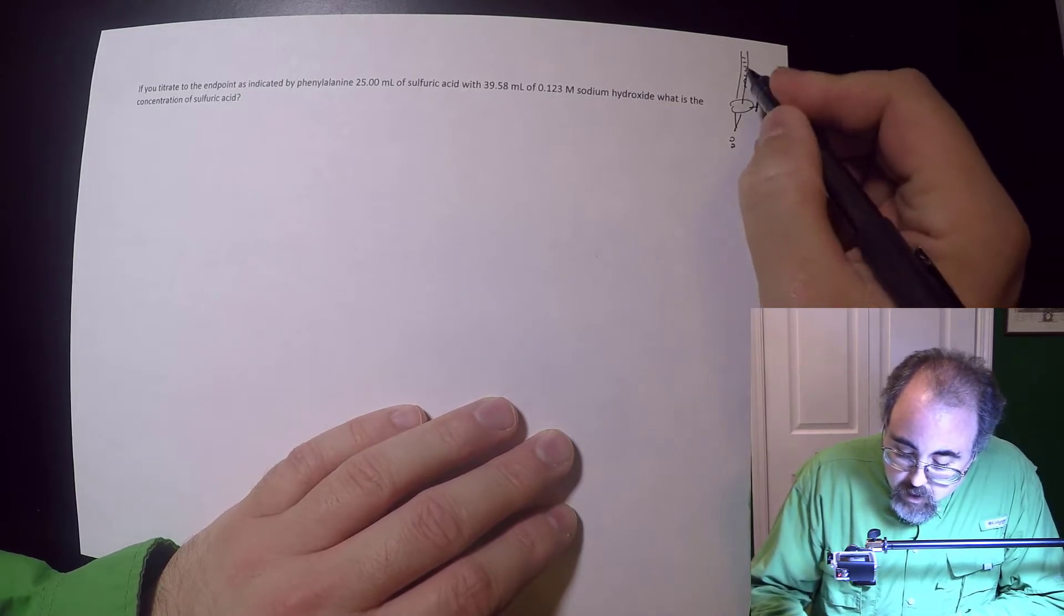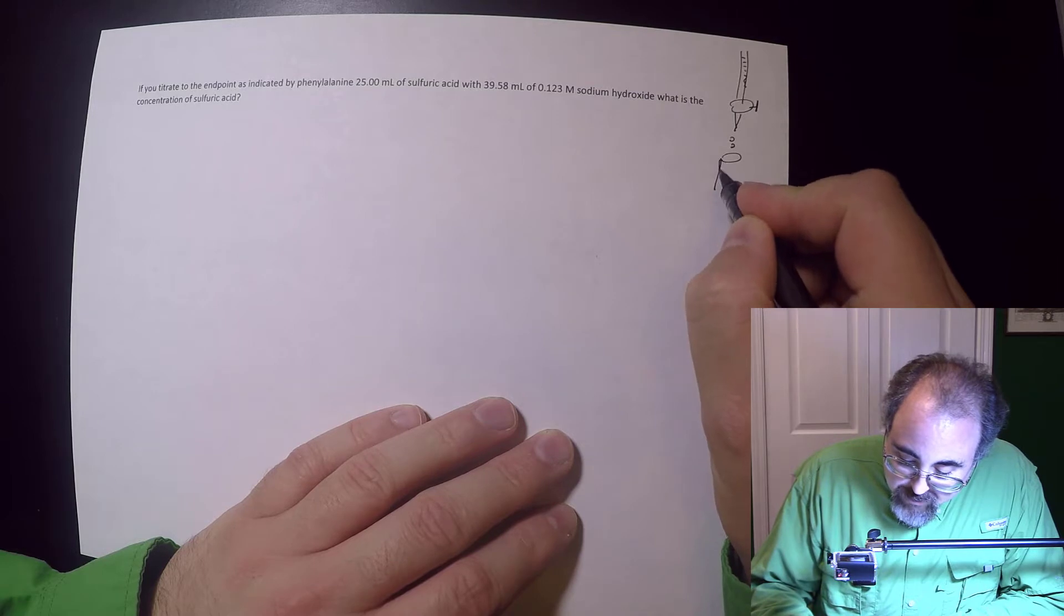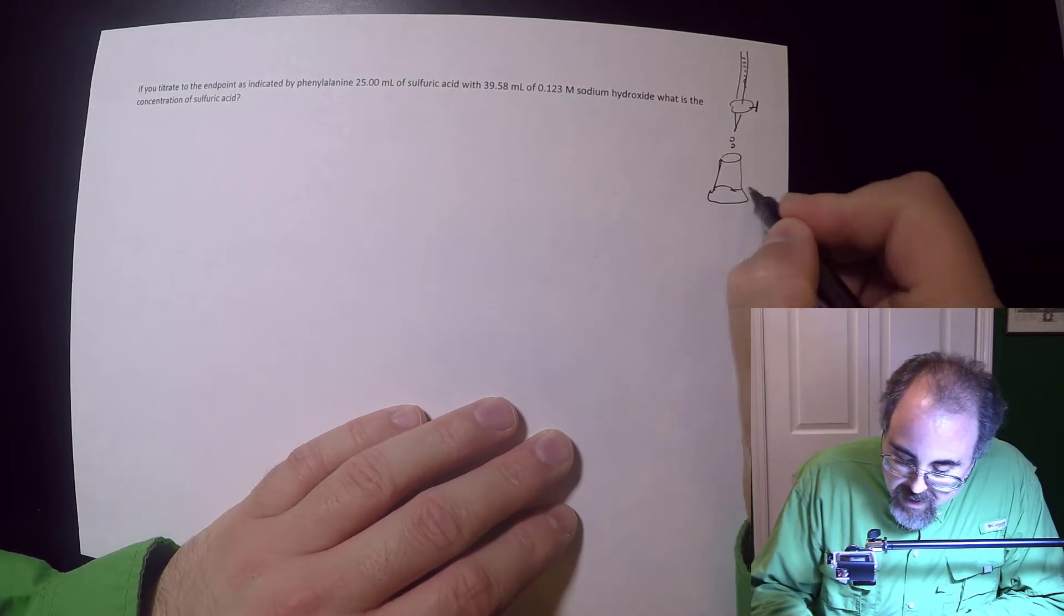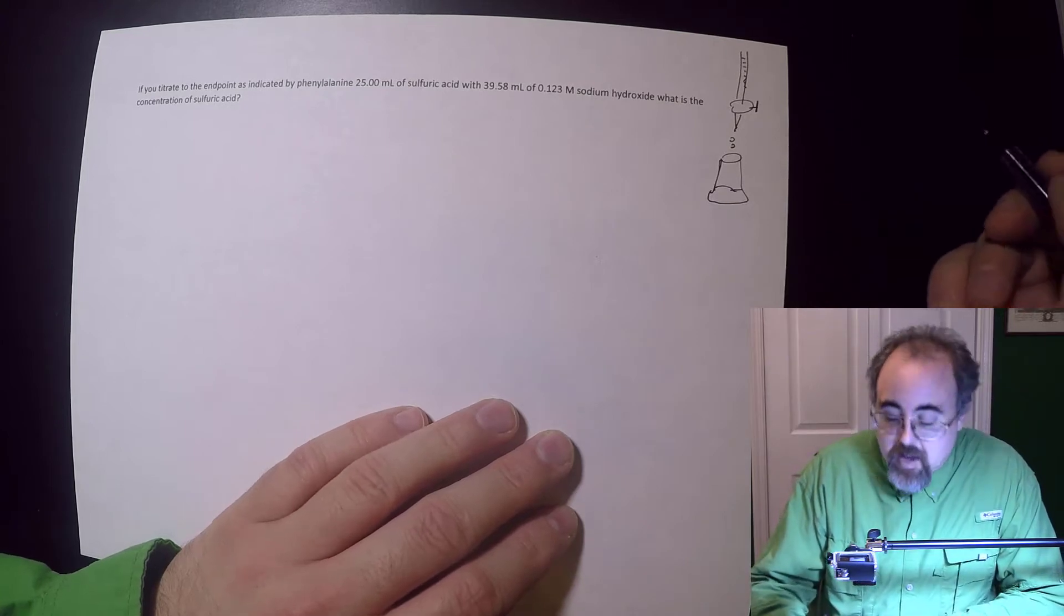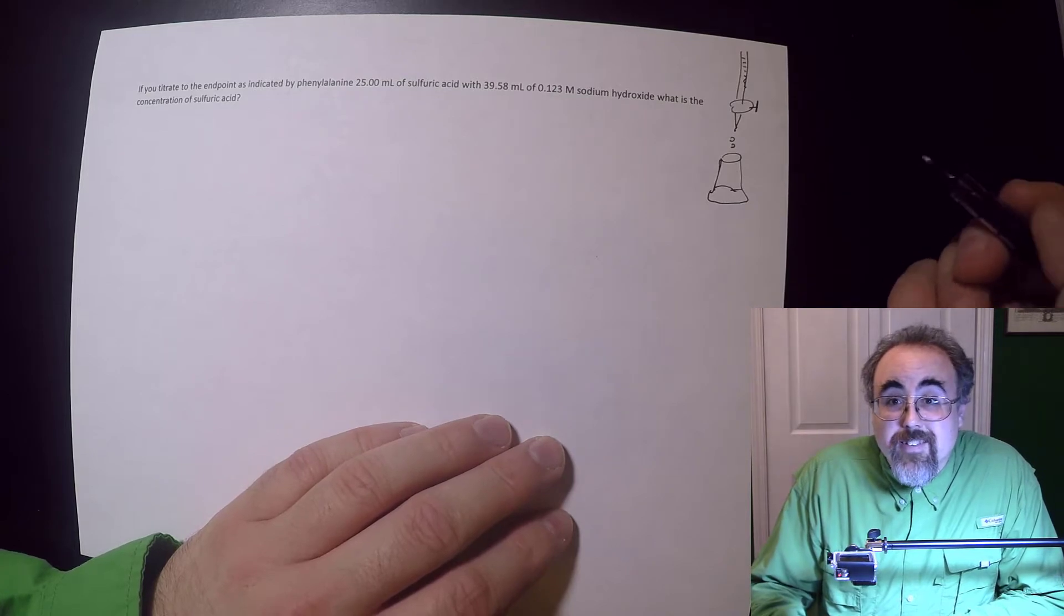This is going to drop the liquid inside here. The liquid here is called the titrant. And you're going to have a flask, typically this is an Erlenmeyer. And in here you're going to have another chemical. So this is going to have the titrant. This is going to have your analyte, which is the chemical you're trying to study.